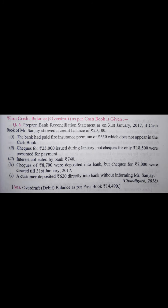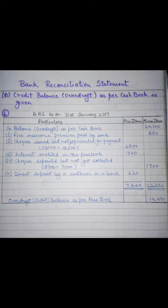The fourth entry: checks of 8,700 rupees were deposited into the bank but checks for only 7,000 were cleared till 31st January 2017. In this case, we calculate the difference of this amount and write it in the minus item column. Checks deposited but not yet collected — subtracting 7,000 from 8,700 gives 1,700 rupees, written in the minus item column.